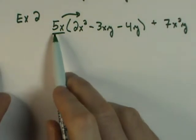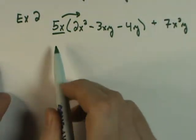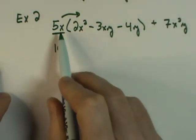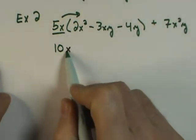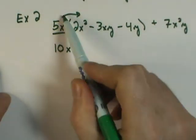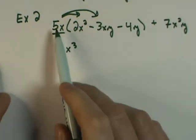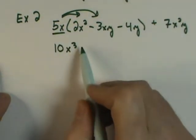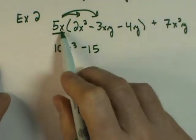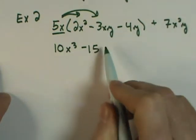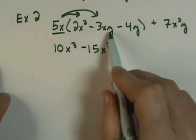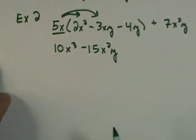As we distribute across here, this becomes 5 times 2, which would be 10. X times x squared would be x cubed. Then moving to the second set of terms, 5 times negative 3 would be negative 15. XX with common bases become x squared, and y comes straight down unchanged.